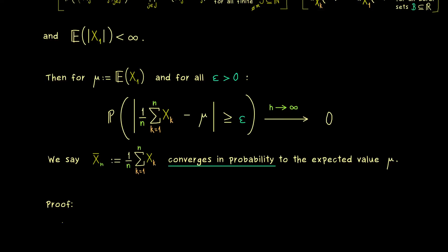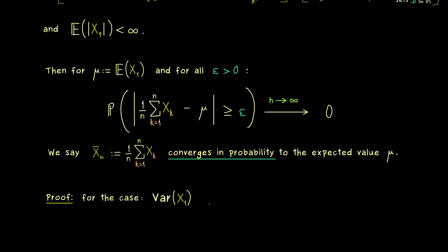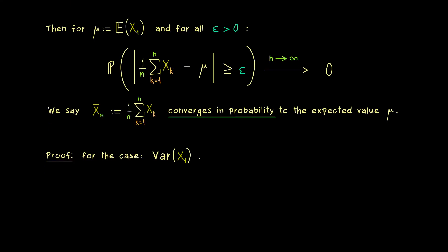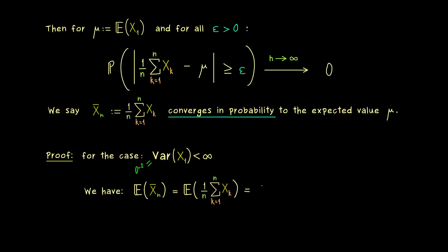We now know the weak law of large numbers, and in fact we can immediately prove it for an important case — namely, for the case that all the random variables have a well-defined variance. We introduce sigma squared equal to the variance. Now we just calculate with the expectation and the variance. First, the expectation of X̄_n is mu as well. We can prove this by using the properties of the expectation: pull out the factor 1/n, and since expectation is linear, pull out the sum. Inside we just have the expectation of X_k.